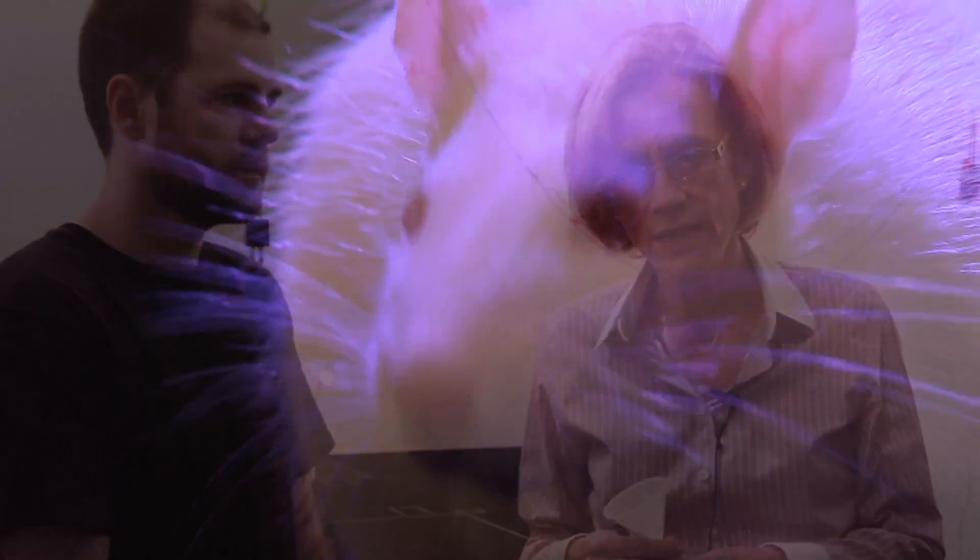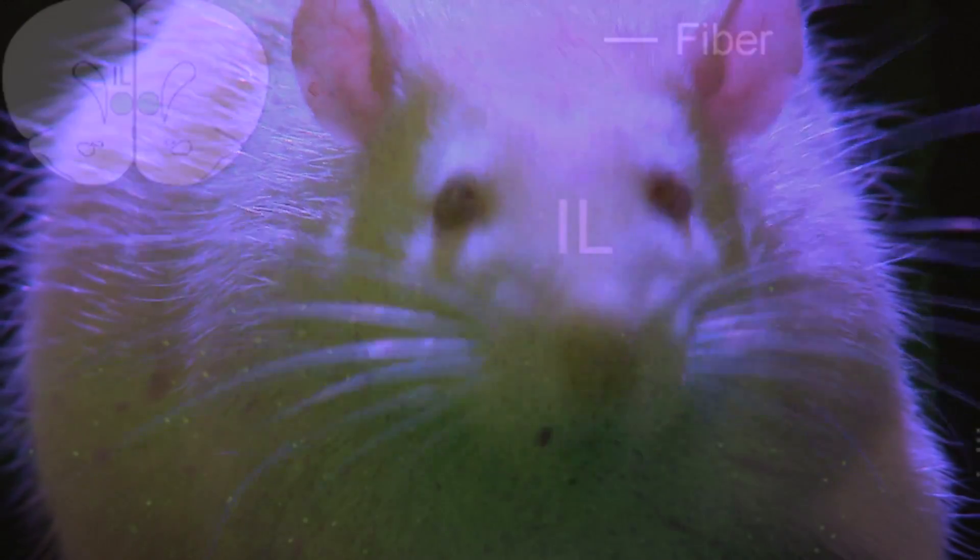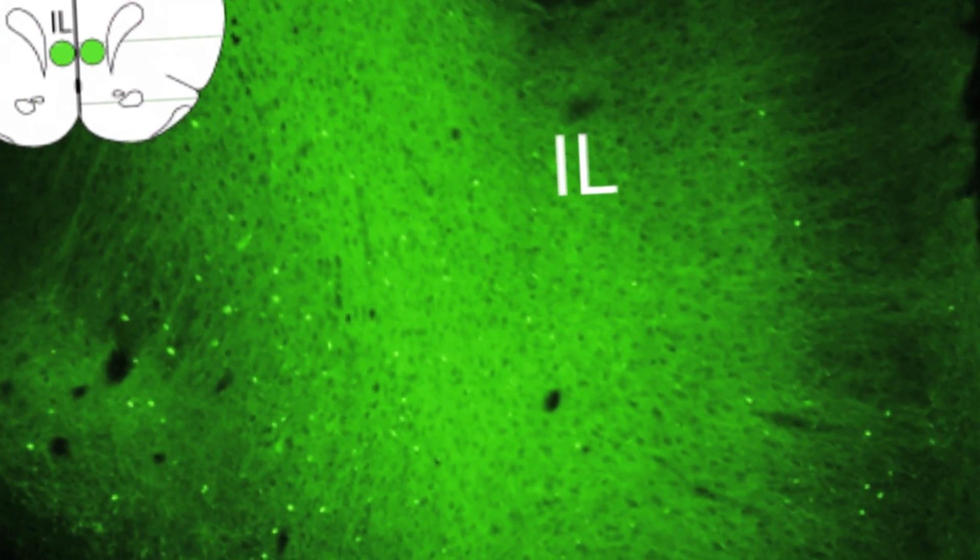So then the question comes, what's going on in the brain when this develops and why could we do that, and could we possibly prevent the habit from forming? We recorded the activity of this infralimbic area, but we also at the same time recorded the activity of the dorsolateral striatum.